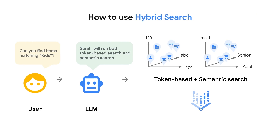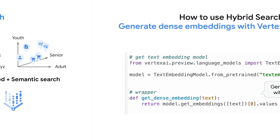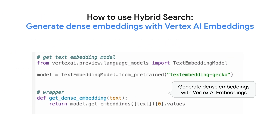Now we can improve our search by combining the strengths of both token-based and semantic search. This hybrid approach will allow us to find relevant results based on both the exact keywords and the meaning behind the query. With the Vertex AI Embeddings API, you can effortlessly generate text embeddings for any given text, just like in this code. These embeddings, used for semantic search, are also known as dense embeddings.